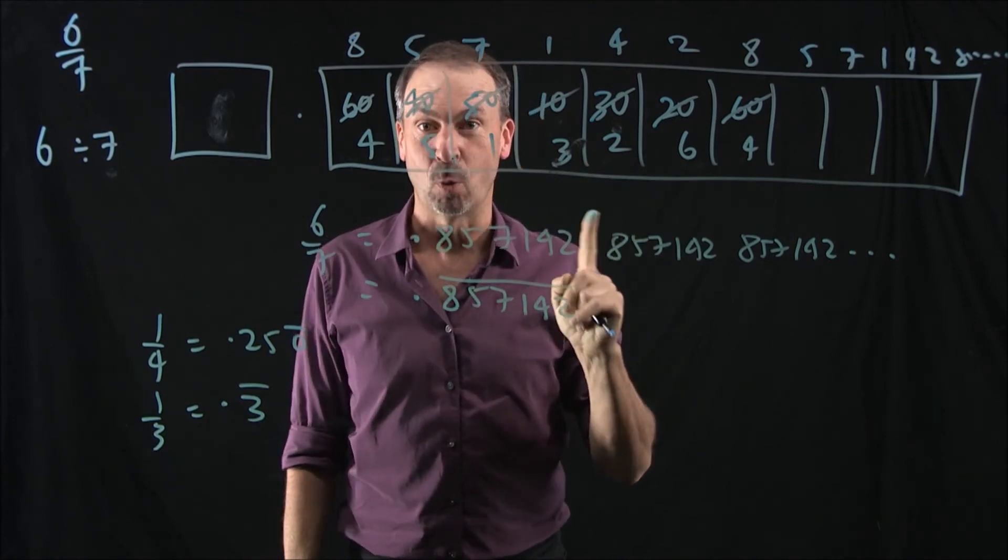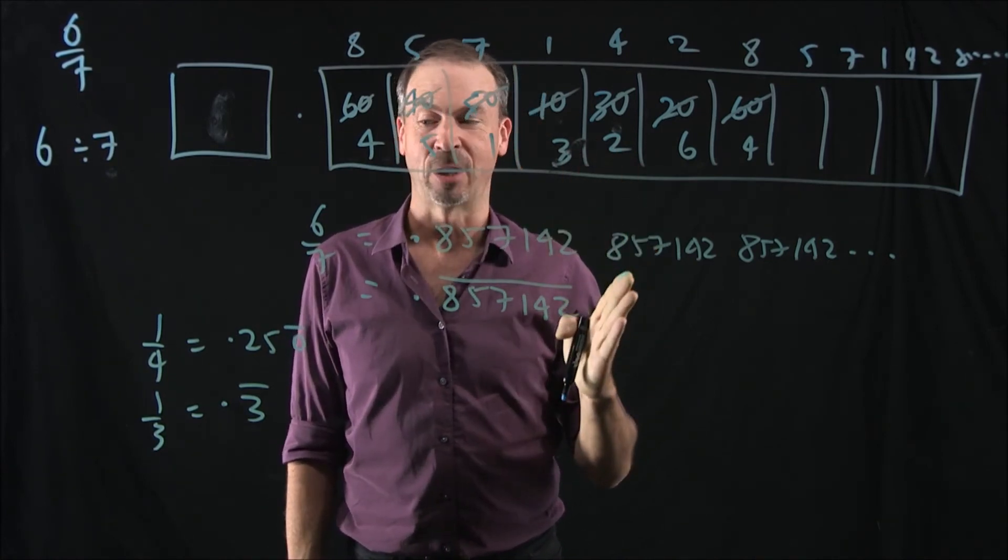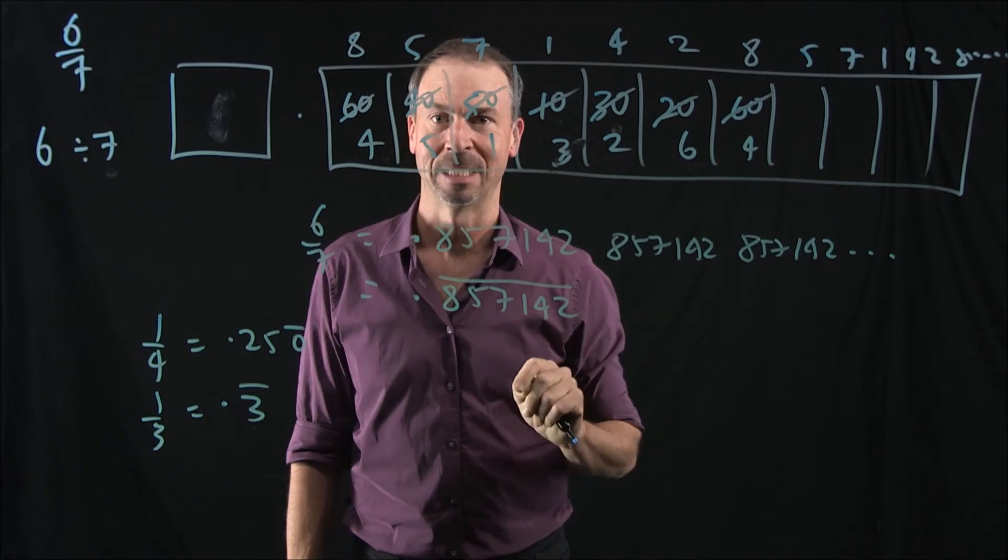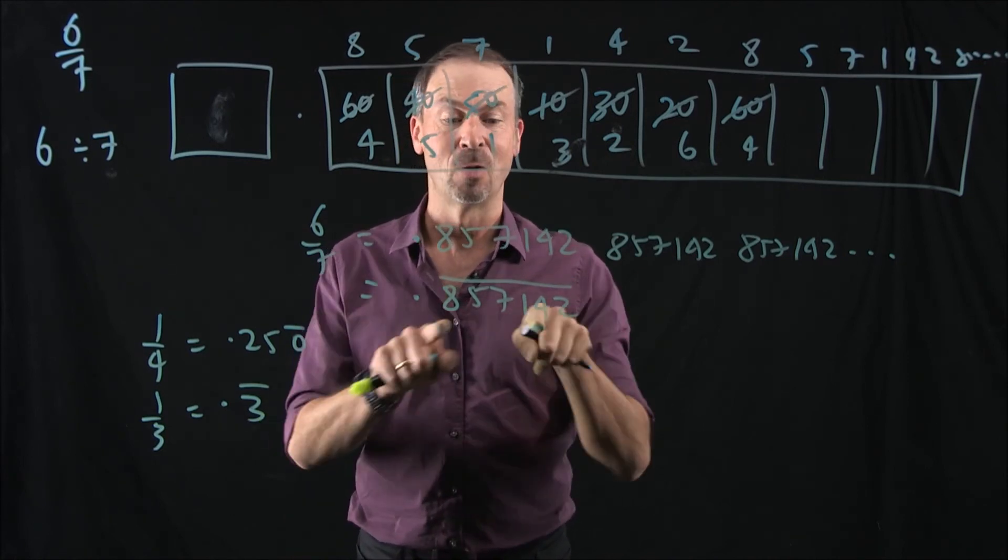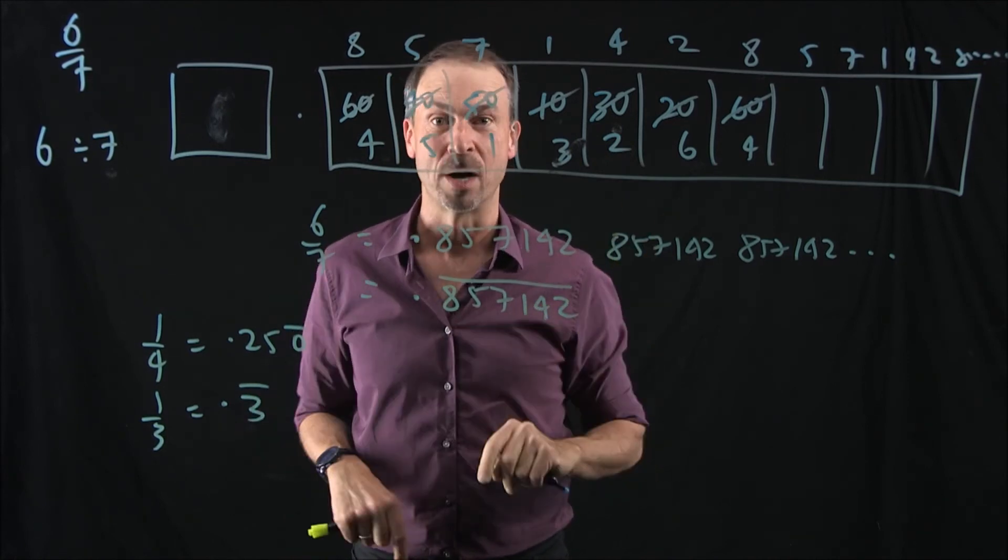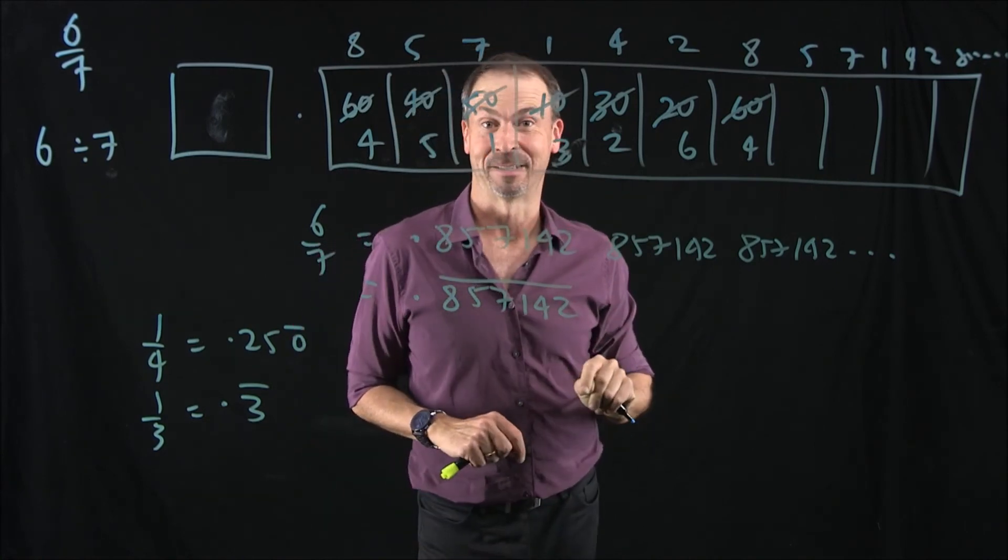So that begs a big question. Is it indeed true that every fraction as a decimal is a repeating decimal? Might be repeating zeros or might be repeating blocks like this. I wonder if it's always repeating. So that's the topic of the next lesson.